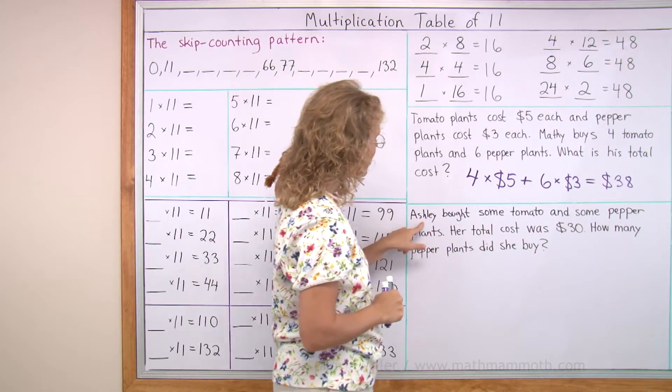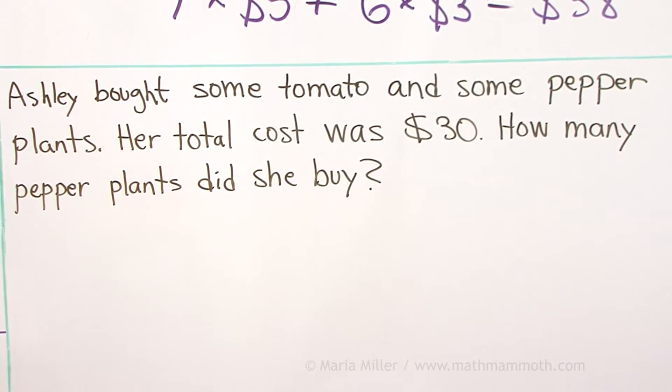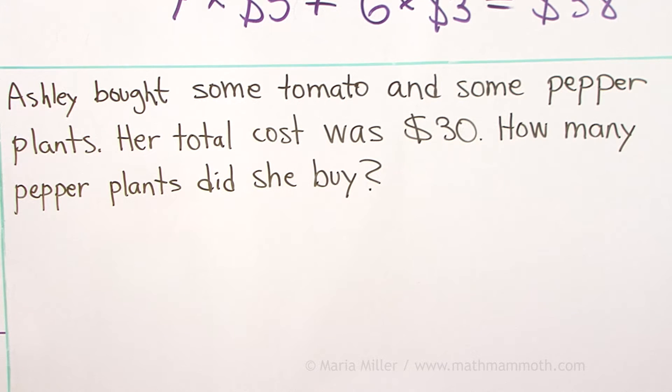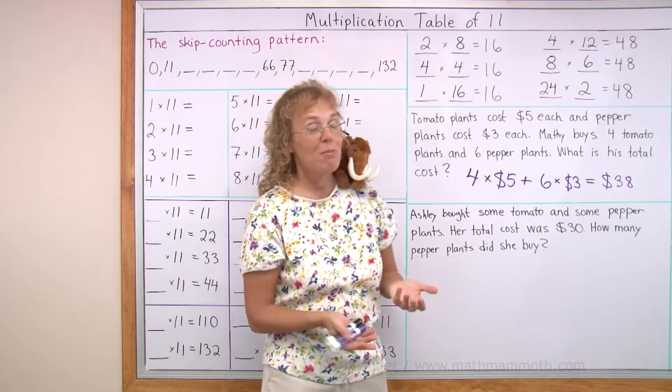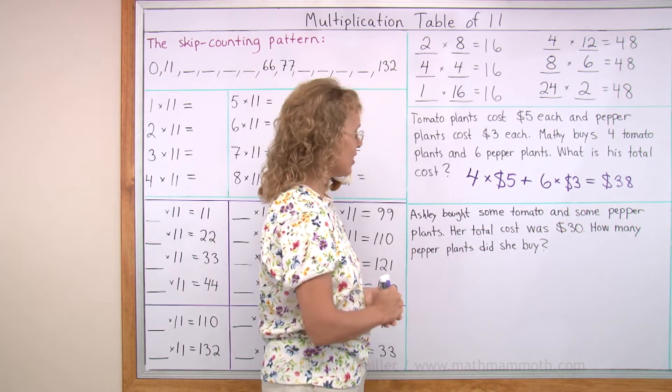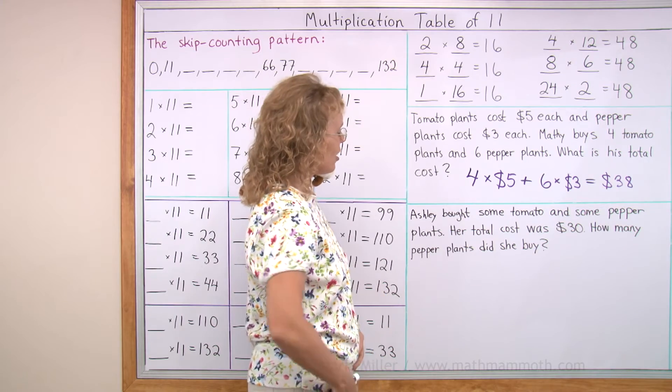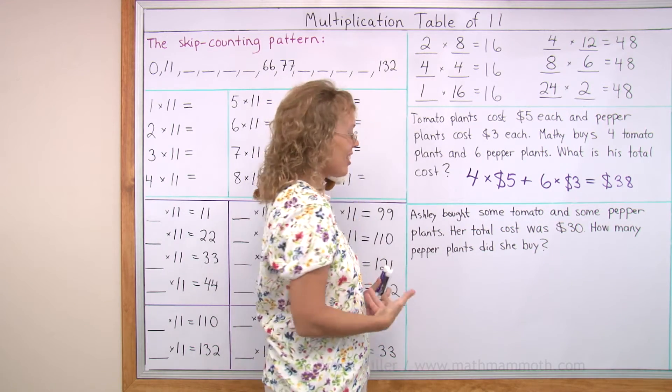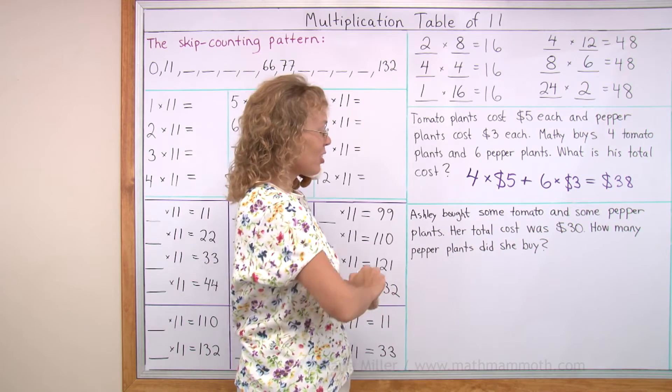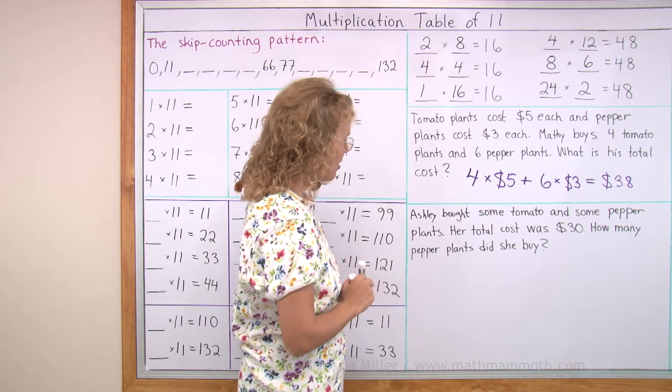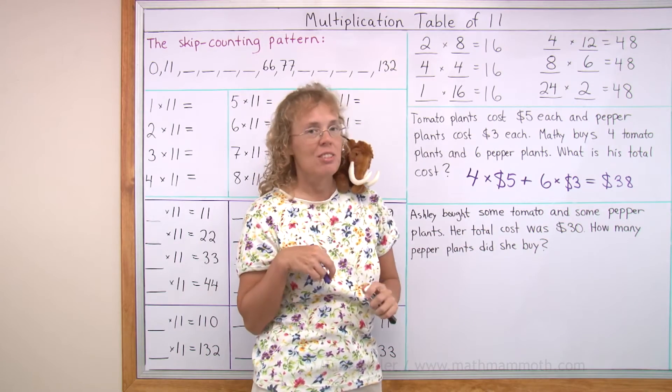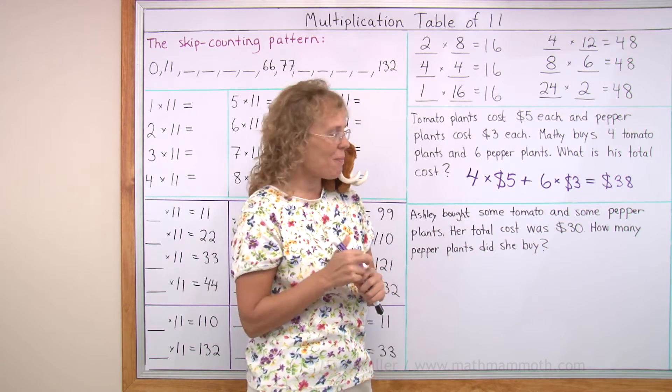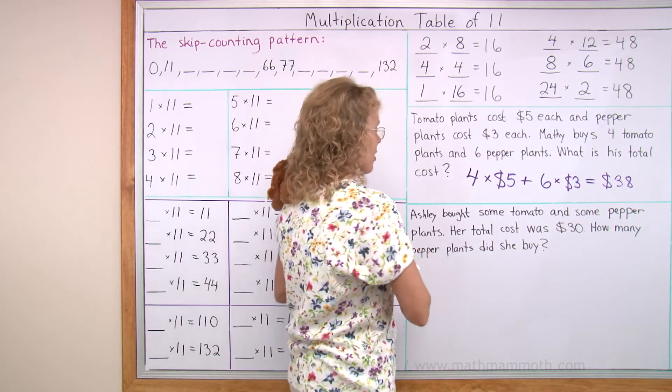Over here, Ashley bought some tomato and some pepper plants. Her total cost was $30. How many pepper plants did she buy? At first, this sounds like you cannot solve it, that there's not enough information. But let's try. The idea is for us to guess and check.